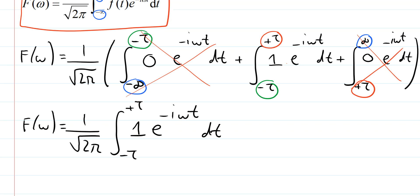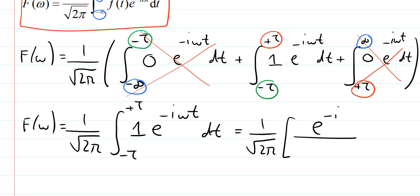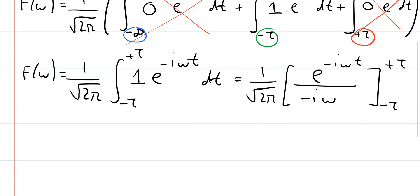This is now a straightforward integral — just the integral of a complex exponential. This gives 1 over the square root of 2π, and as always when we integrate an exponential we get the same exponential, bringing out a factor of minus iω into the denominator, evaluated between the limits minus τ and plus τ.